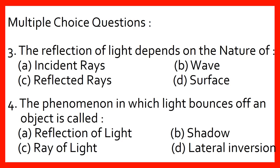Multiple choice questions: Question 3 — The reflection of light depends on the nature of blank. Question 4 — The phenomenon in which light bounces off an object is called: Option A — Reflection of light, Option B — Shadow, Option C — Ray of light, Option D — Lateral inversion.